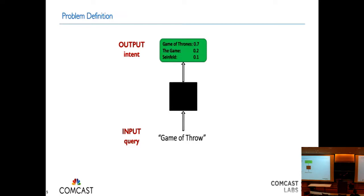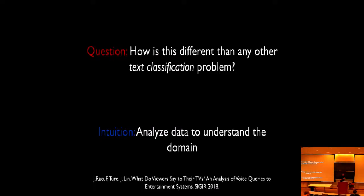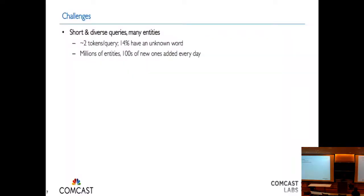We want to represent the output as a probability distribution across the entire catalog. The question arises: how is this different from any other text classification problem? We wanted to see if it is indeed something more than just a simple text classification problem, and the first thing we did was look at the data. Nobody had actually analyzed multimedia or entertainment domain data before in this context; there were other publications about other domains from Yahoo and Google, especially on mobile and laptop.